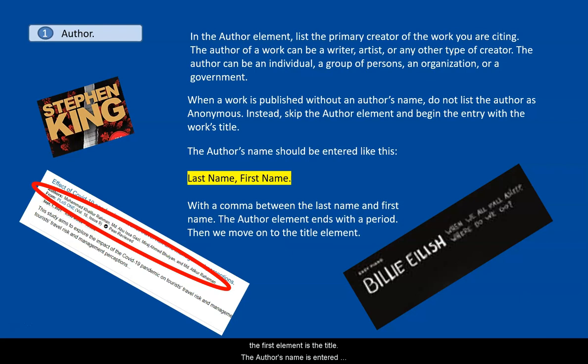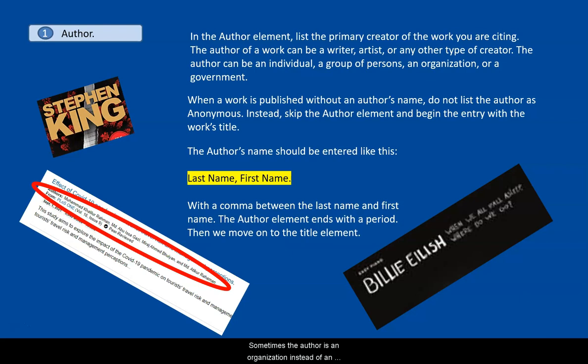The author's name is entered last name first, followed by a comma, a space, and then their first name, followed by a period. Sometimes the author is an organization instead of an individual. In that case, put the name of the organization, followed by a period.